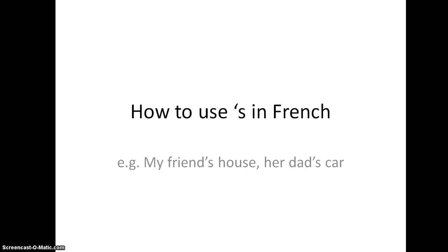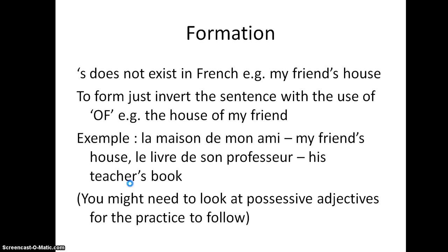This is how we use the possessive apostrophe-s in English in the French language. It doesn't exist in French, so we have to restructure the sentence. Things like 'my friend's house' or 'her dad's car' would need to be changed. Since it doesn't exist, we invert the sentence by using the word 'of'. So 'my friend's house' becomes 'the house of my friend'.